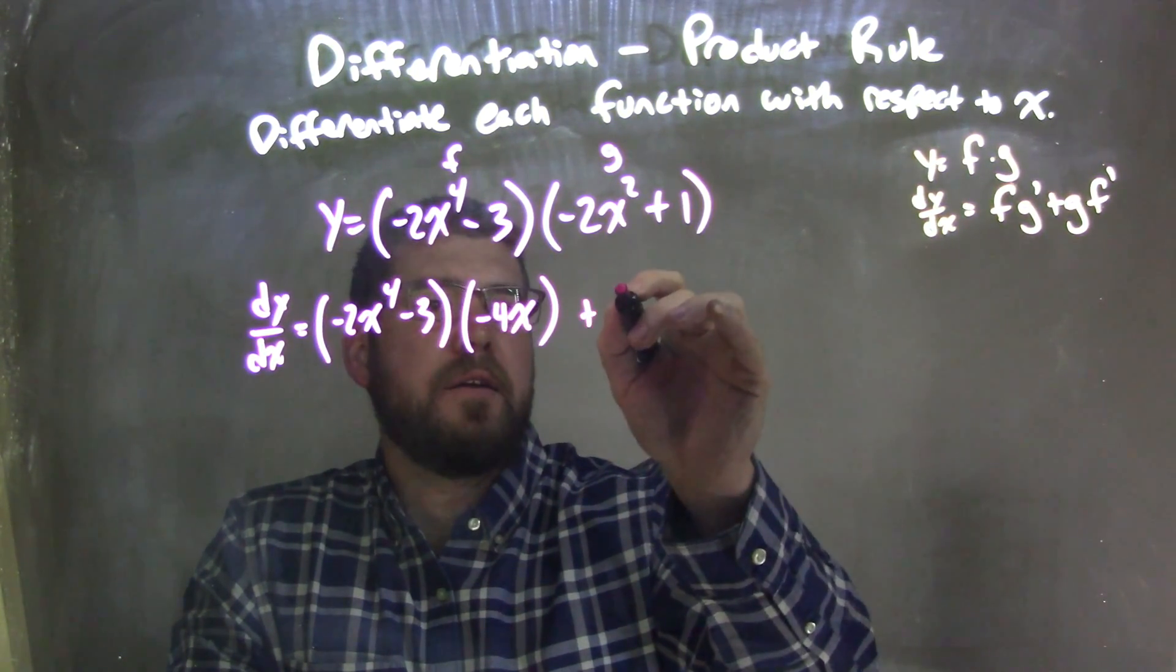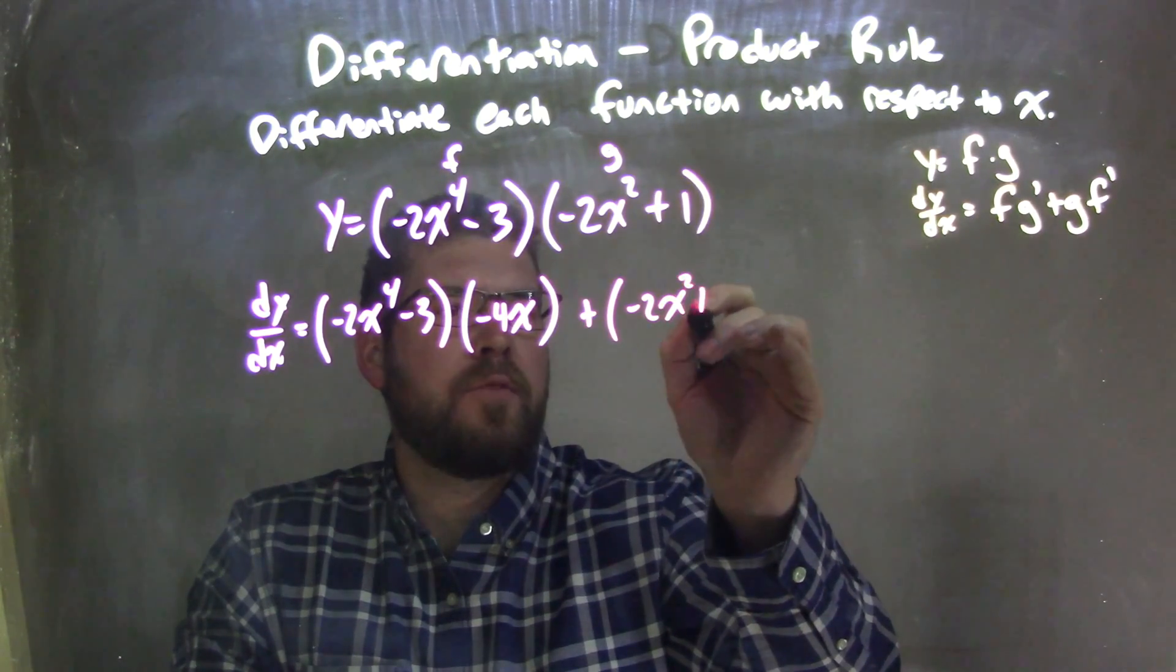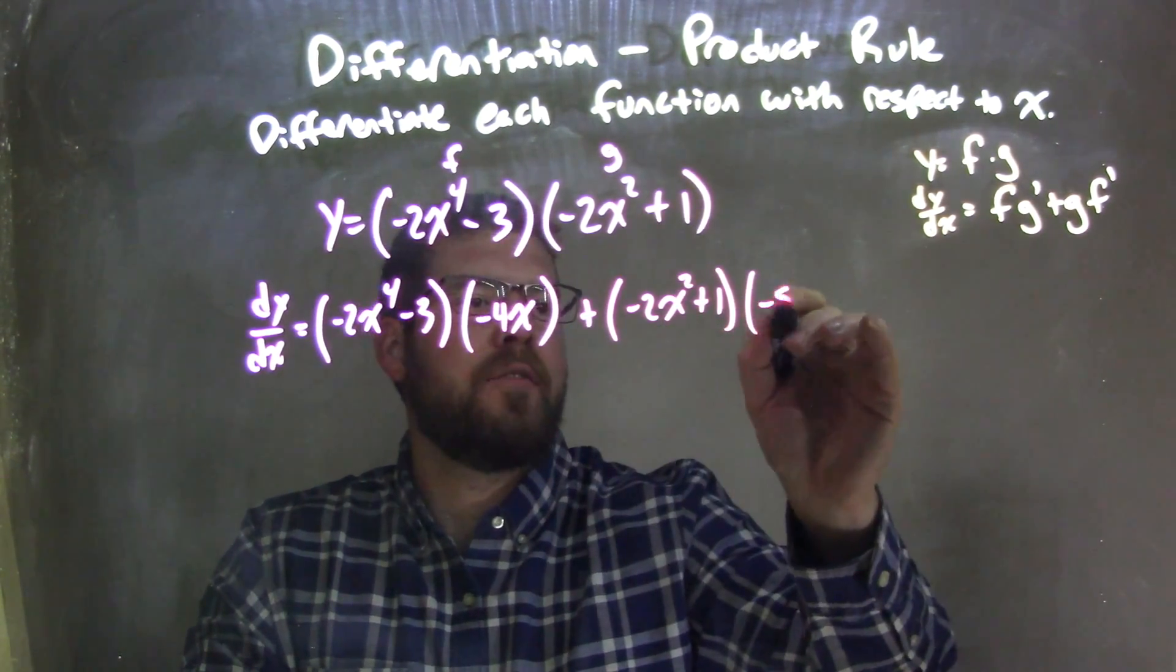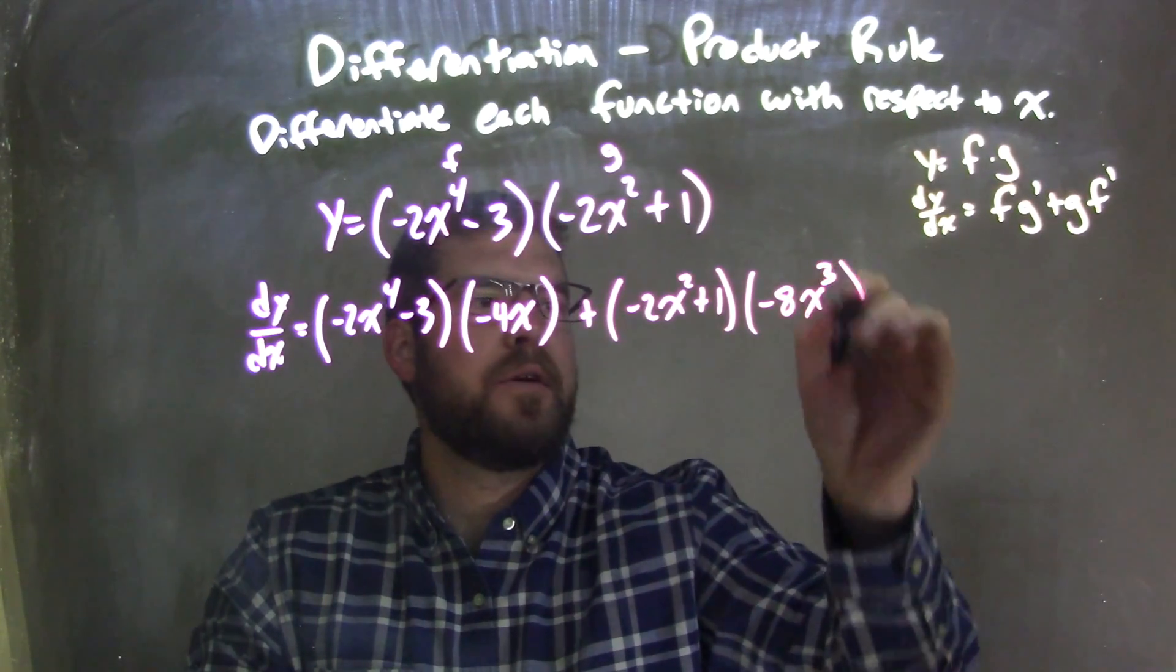Plus the second, g, negative 2x squared plus 1, times the derivative of the first. Take the derivative of the first, negative 8x to the 3rd, and that's it.